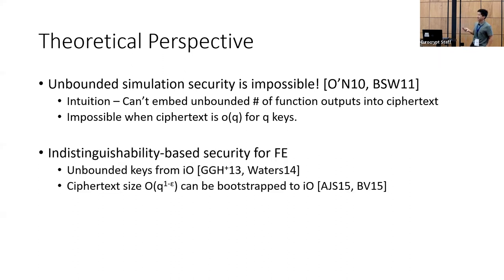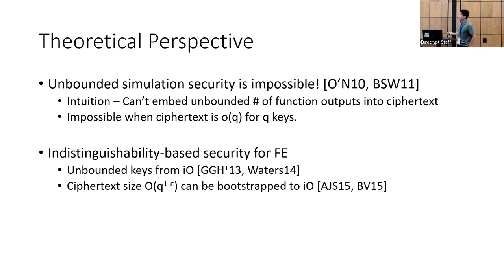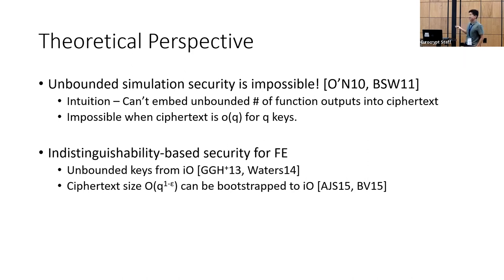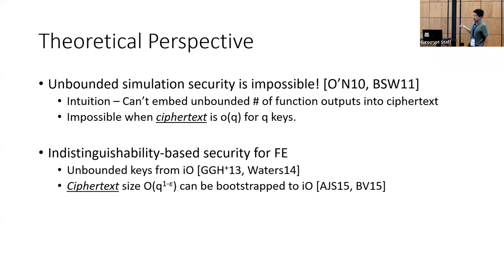There is also an indistinguishability-based definition of functional encryption, which is constructible. But even here, when you try to force it to be sublinear in your collusion bound, it gives you full collusion-resistant functional encryption, which we only know how to realize from fairly hard cryptographic assumptions. In contrast, if we allow our scheme to grow linearly, prior works achieve linear dependence in the collusion bound. So if it's sublinear, it's either impossible or realizable only from IO; if it's linear, we can get it from public key encryption. But these impossibility results only talk about ciphertext size.